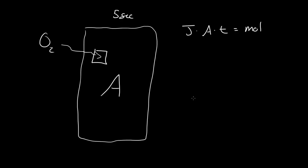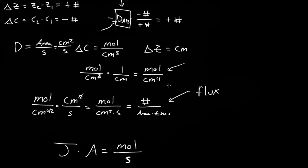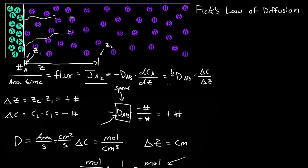So that is Fick's first law of diffusion. Again, the only thing I would add is that this little D right here represents an infinitesimally small change. But again, you can just think of it as delta C over delta Z. They just mean infinitesimally small. So that is Fick's first law of diffusion.